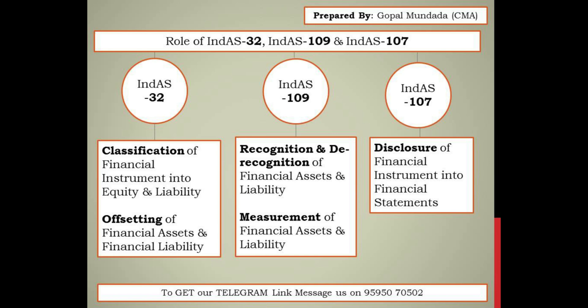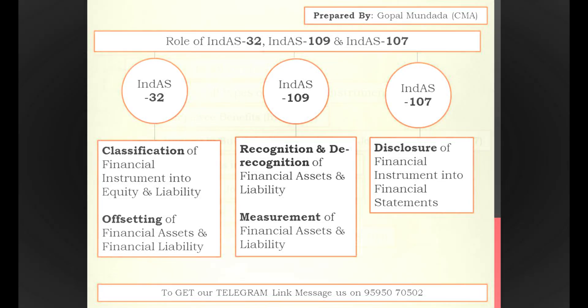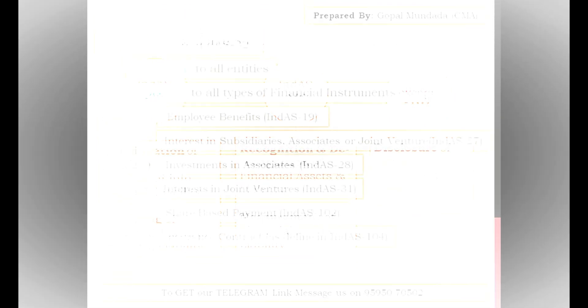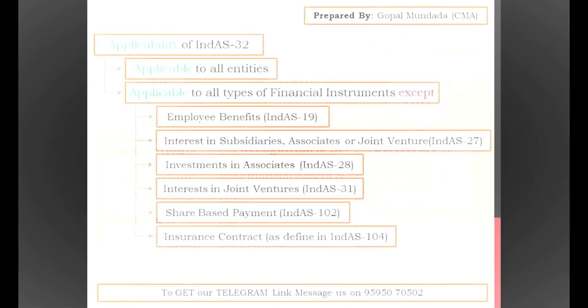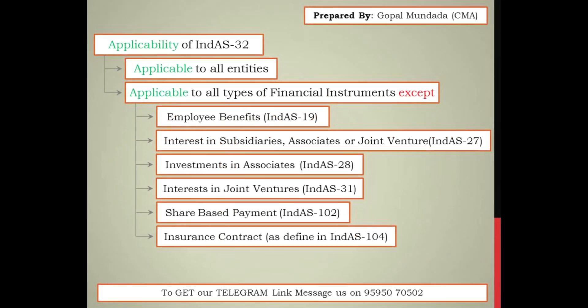As we already discussed, Ind AS 109 comes into play for measurement, recognition, and de-recognition of financial liabilities and financial assets. The role of Ind AS 107 is the disclosure of financial instruments. Now we understand the applicability of all three Indian AS.